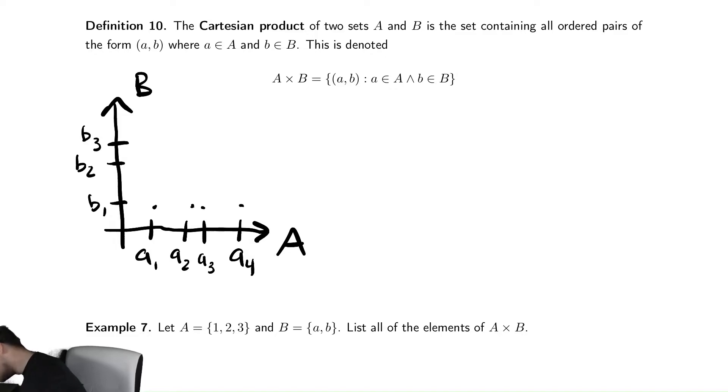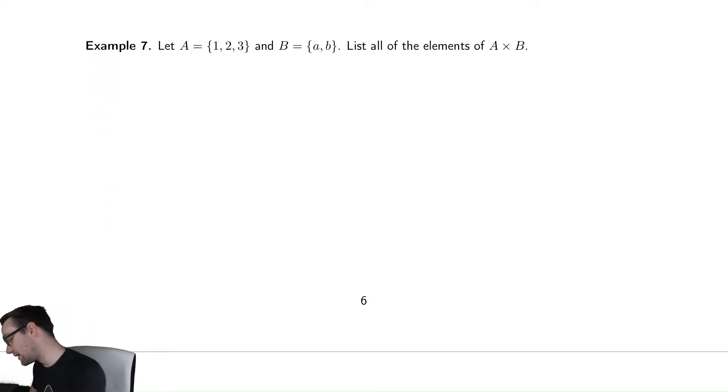This is the set of all of the points on that axis. You're trying to write out all the different things where the X coordinate, the first thing in the ordered pair, comes from A, and the Y coordinate comes from B. So let's write out an example just to showcase what I mean.